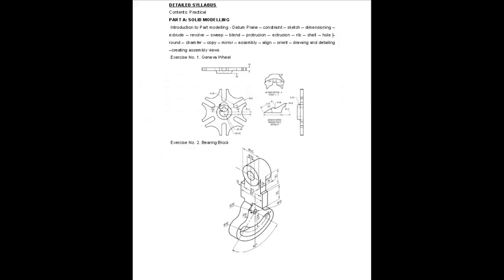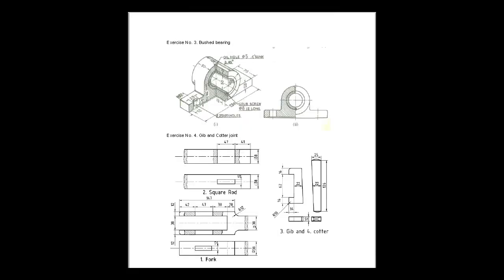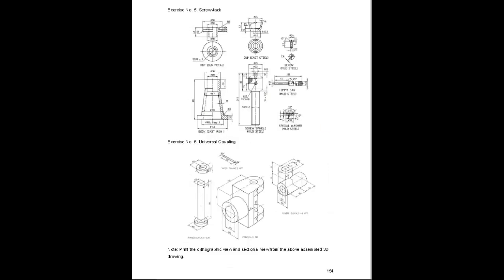The syllabus is divided into Part A and Part B. Part A covers solid modeling — total CAD solid modeling. This part involves 3D solid modeling using CAD software available at the institute for CAD modeling.